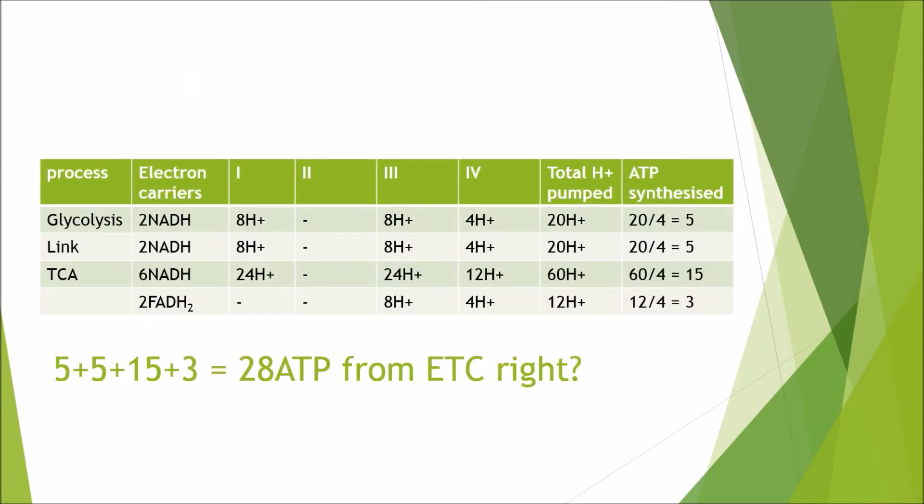So if we get five from the glycolysis, we get five from the link reaction, we get 15 from the NADHs from the tricarboxylic acid cycle, and we get three from the FADHs from the TCA cycle. So that means we get 28 ATPs from the electron transport chain in total, right? Well, actually, it's not as straightforward as that. Because we know in biology, things are exactly complicated.